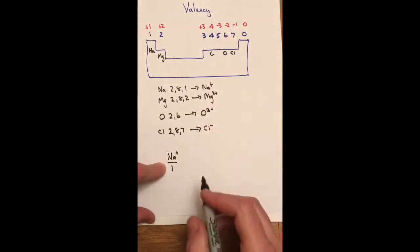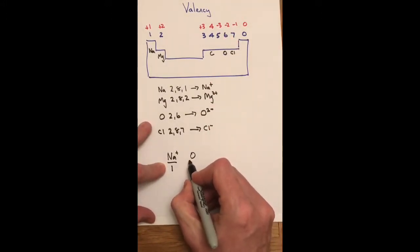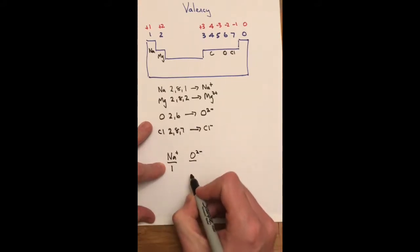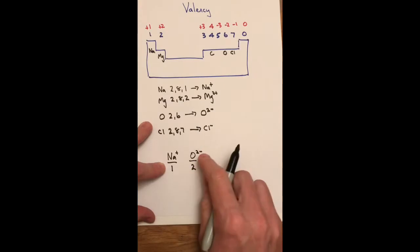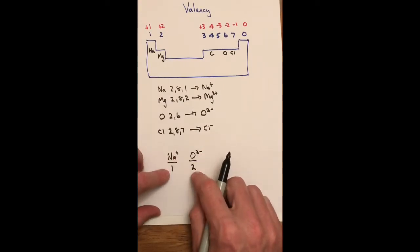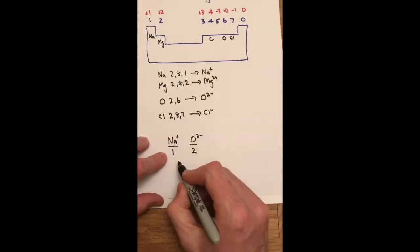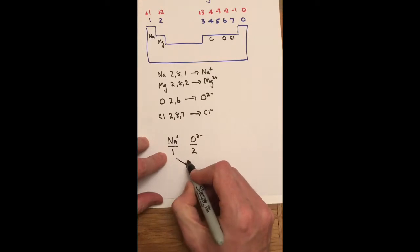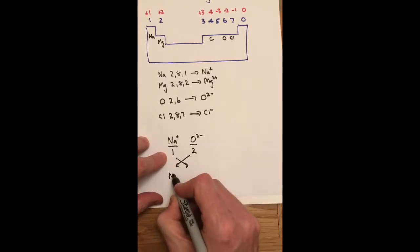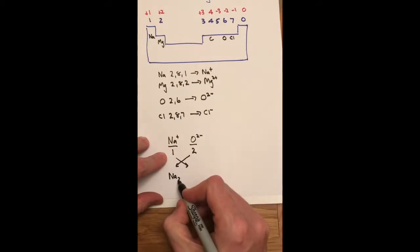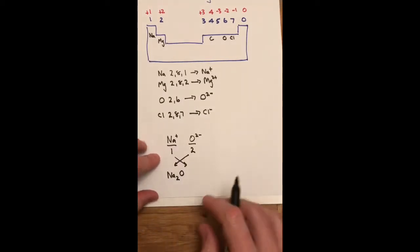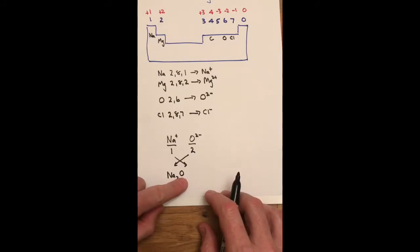If I was to pick oxygen from over here, oxygen is in group six. So it's a two minus ion. Therefore, the valency is two. So the charge becomes the valency without the charge in there. So this is a plus one, so it's one. This is a negative two, so it's two. To work out the formula, I now cross these over. So the sodium gets the number two, and the oxygen gets the number one. So I don't put the number one down. So my formula for sodium oxide is Na2O to make it work.